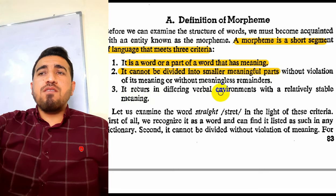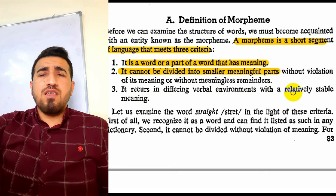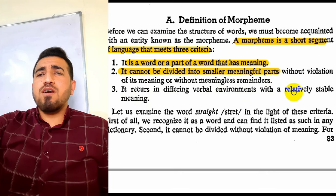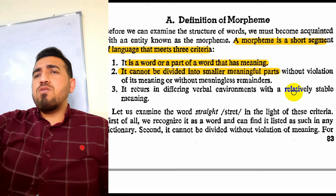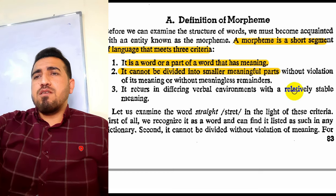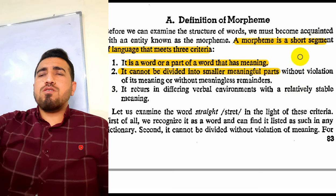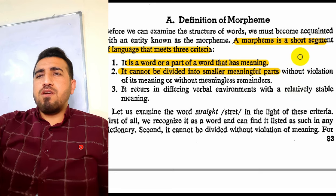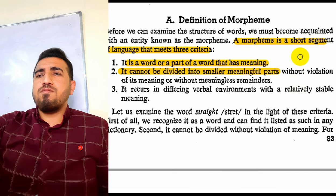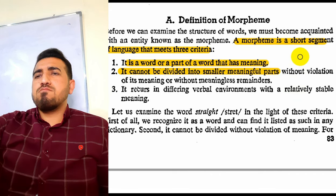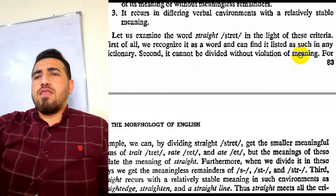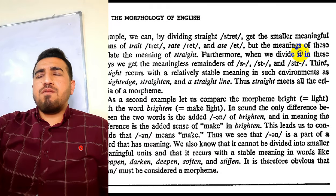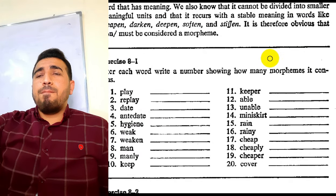The third criterion is that a morpheme occurs in a variable environment with relatively stable meaning. This means we can find a morpheme in different parts of words depending on the context or topic. For example, we can add '-ed' for past tense and '-ing' for continuous forms. These are morphemes that appear in varying environments. These are the three criteria for a morpheme.